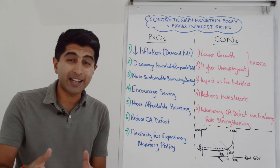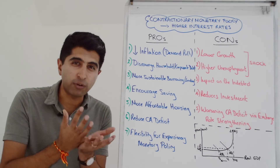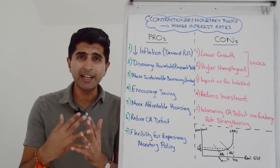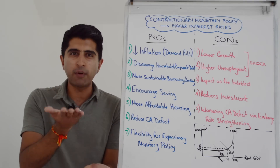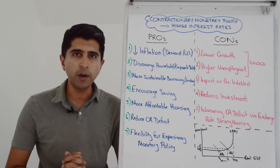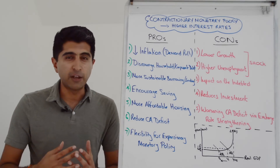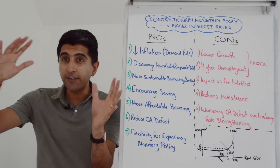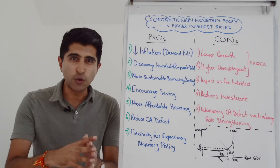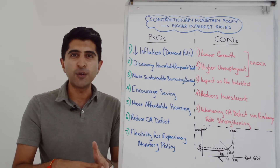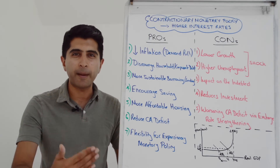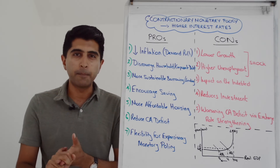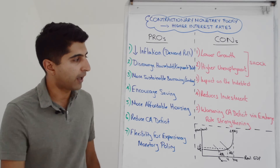Higher interest rates can also actually worsen a current account deficit by strengthening the exchange rate — good evaluation to the point made earlier. If interest rates are high, that can lead to hot money inflows. For example, if UK interest rates are rising and are higher relative to other countries, savings from abroad will flood into UK financial institutions. When that money is saved in the UK, it will be saved in pounds, increasing demand for the pound, increasing the value of the pound, and strengthening it. From a strong pound, imports become cheaper and exports become more expensive, which creates a link to a worsening current account deficit.